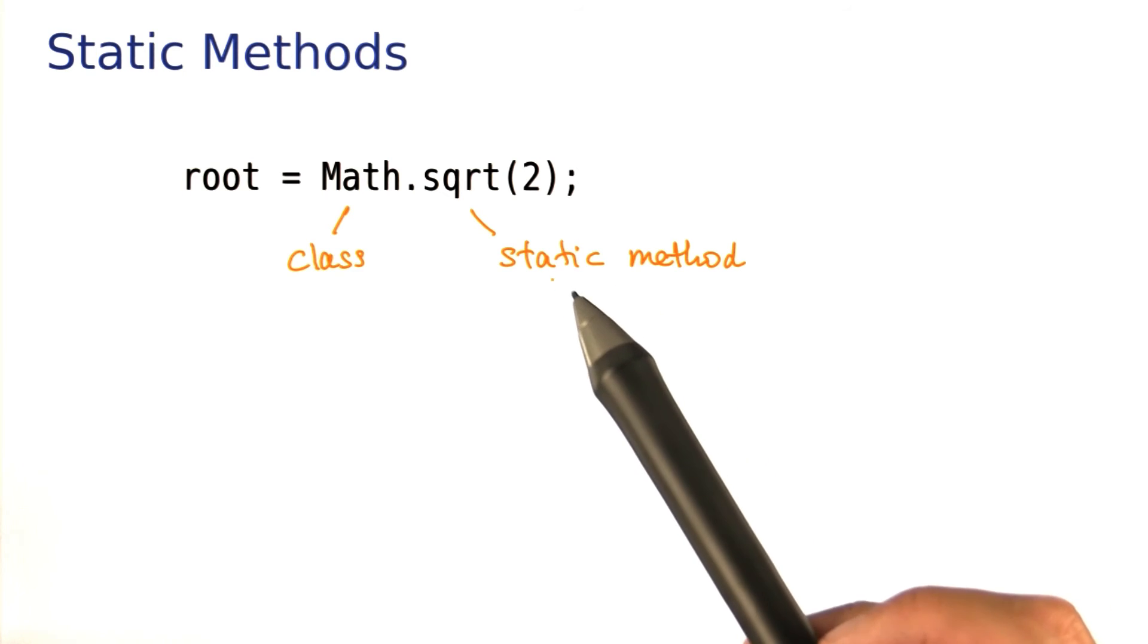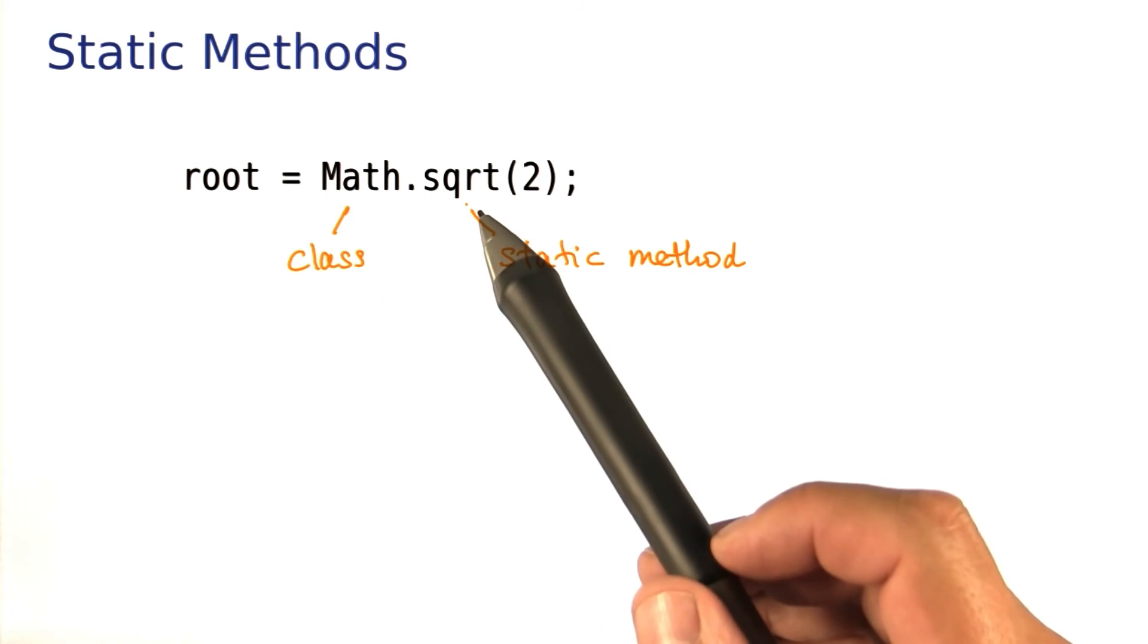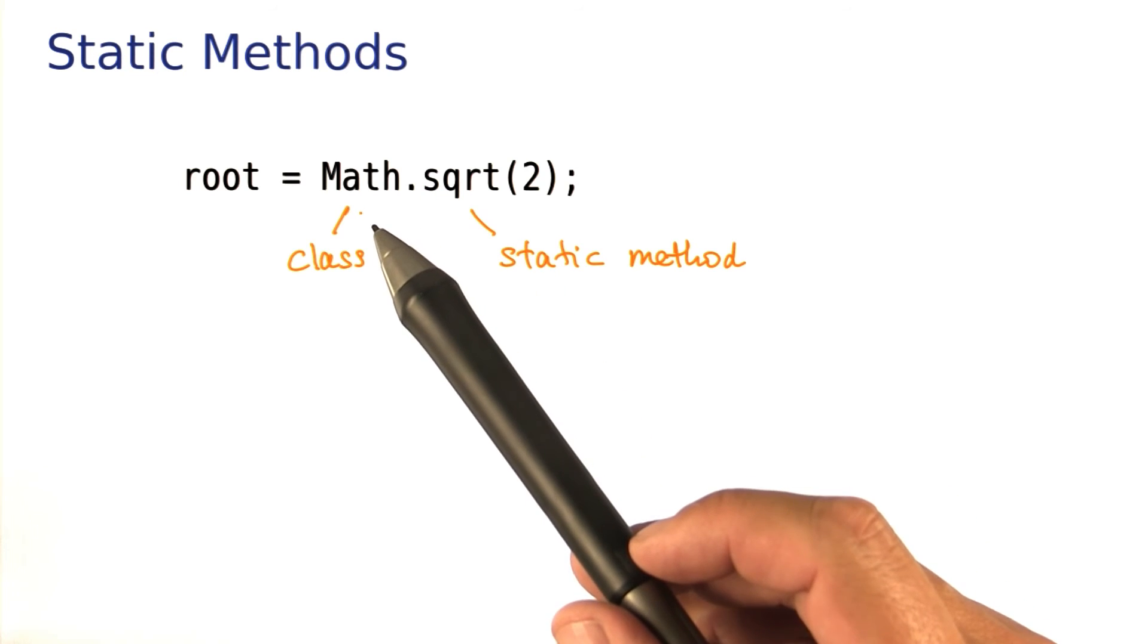And once again, there is no object of the math class. We simply call the square root method directly on the class.